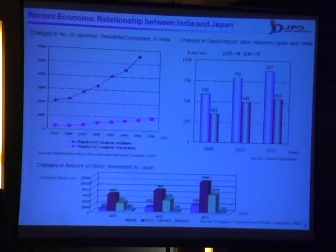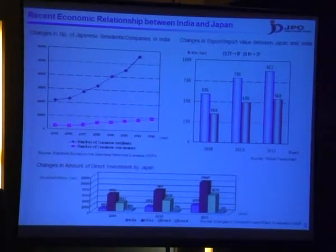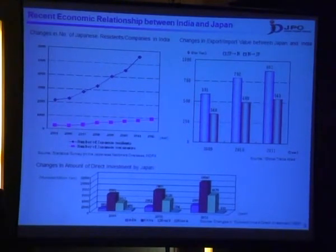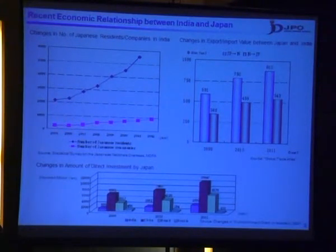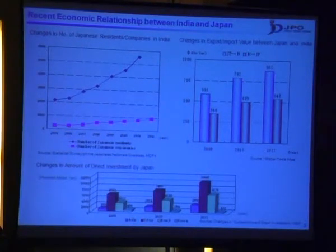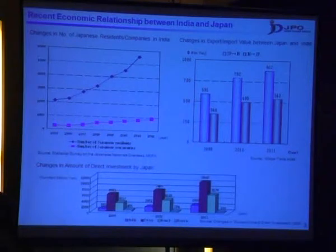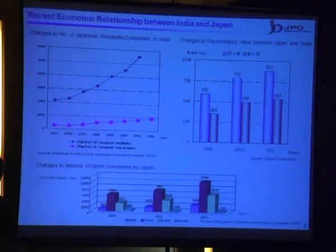Please look at the bar graph on the upper right-hand side. This graph shows the changes in export and import value between India and Japan. As indicated by this graph, export and import value between the two countries have increased in recent years. Please look at the bar graph on the bottom. This graph shows the changes in the amount of direct investment made by Japan in BRICS countries. As indicated by the blue bar that represents investments in India, the amount of Japanese direct investment in India has increased in recent years.